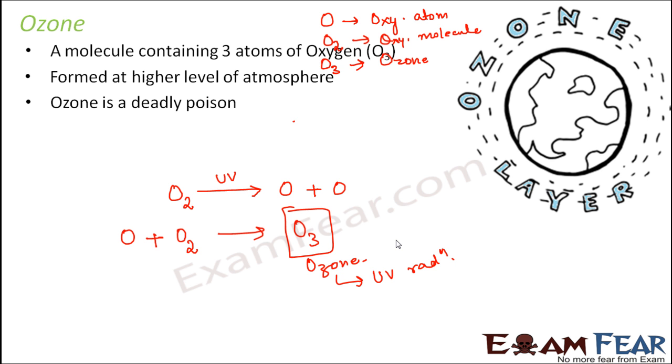Now you might ask from where is this ultraviolet radiation coming? Now the sun emits many different types of radiation like the visible light, the infrared radiation, ultraviolet radiation, radio waves, microwaves, etc. So out of all these radiations, only visible light is useful to the earth, right?